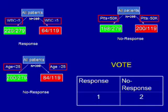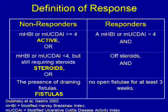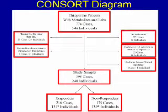In this example, one variable predicts response and two do not. We developed algorithms on two-thirds of the sample using predictors such as the CBC, chemistries, and age, and evaluated the algorithm on the remaining one-third. We compared ROC curves for clinical response between 6TGN and machine learning algorithms, using the methods of Dr. Dubinsky in her 2002 gastroenterology paper to define clinical response in IBD patients on thiopurines. We had 774 cases representing 346 individuals at the University of Michigan. After excluding five groups of patients, we had 395 cases representing 240 individuals — 216 responder cases representing 131 individuals and 179 non-responder cases representing 139 individuals.